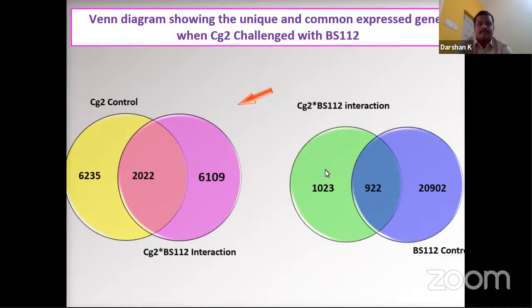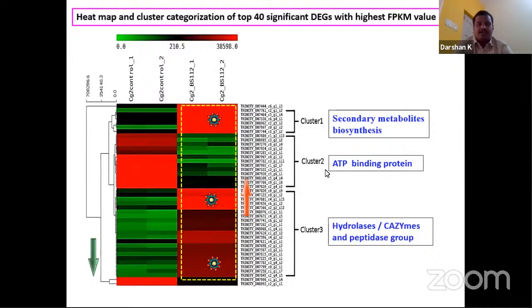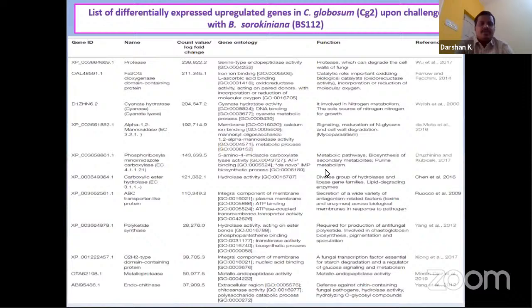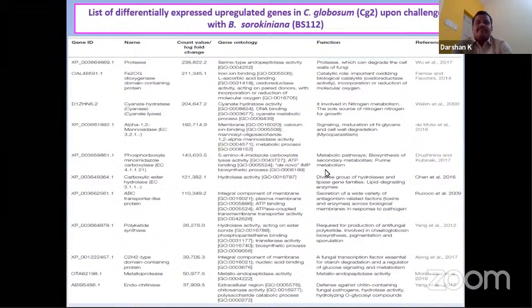A heat map was constructed based on the top significant differentially expressed genes by highest FPKM values. Red color indicates highest upregulation and green indicates lower expression. Cluster categorization showed that clusters one and three, associated with secondary metabolites, hydrolytic enzymes, and calcium-related genes, are highly expressed in the interaction. Upregulated genes include protease, cyanide hydratase, phosphatase, and polyketide synthase, each with predicted antagonistic functions.